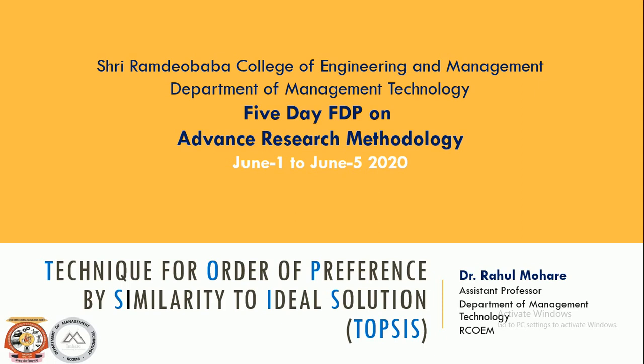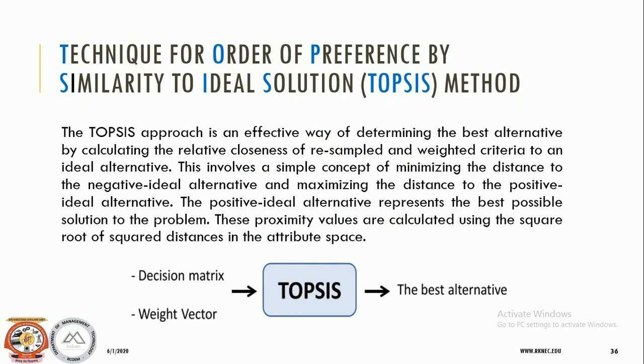In many business applications you can find this technique being used most widely. So what exactly is TOPSIS? TOPSIS is an approach which is very effective to determine the best alternative, and it works on the calculation of closeness of resampled and weighted criteria to an ideal alternative. It is a multiple criteria decision analysis method, originally developed by Ching Lai Hwang and Yoon in 1981 — a pretty old, practice-tested, and trusted method.